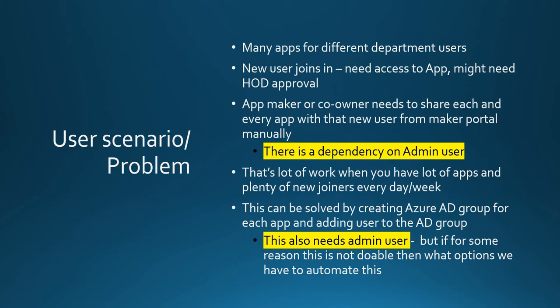We want to understand if there's a way to automate this process. You might also want to include an approval process where a manager or HOD says okay, grant access for this user to this app, but not for others. One quick solution is to create an Azure AD group, add the user to that group, and grant access to that Azure AD group on the Power App.